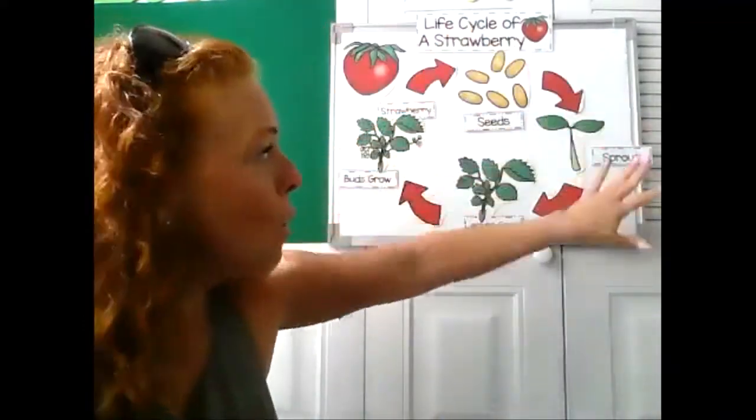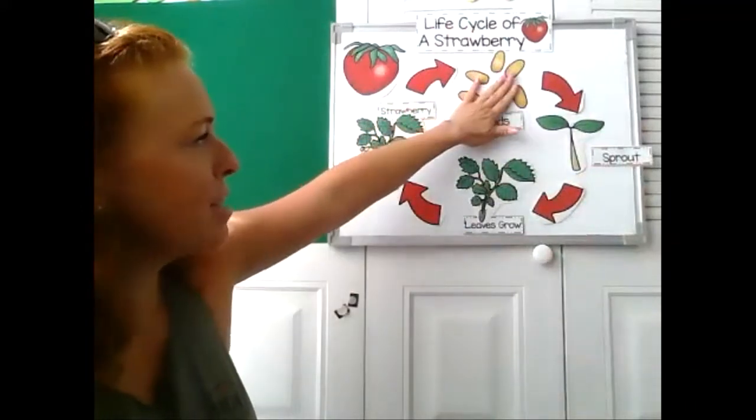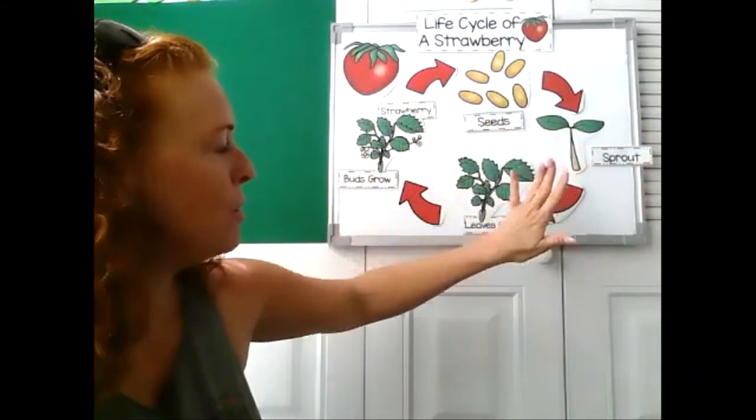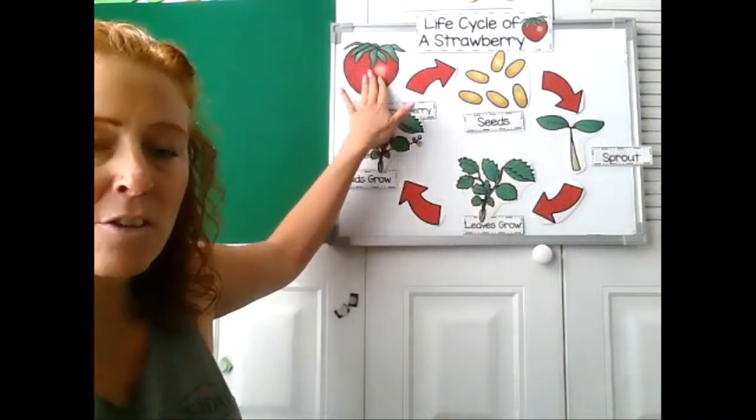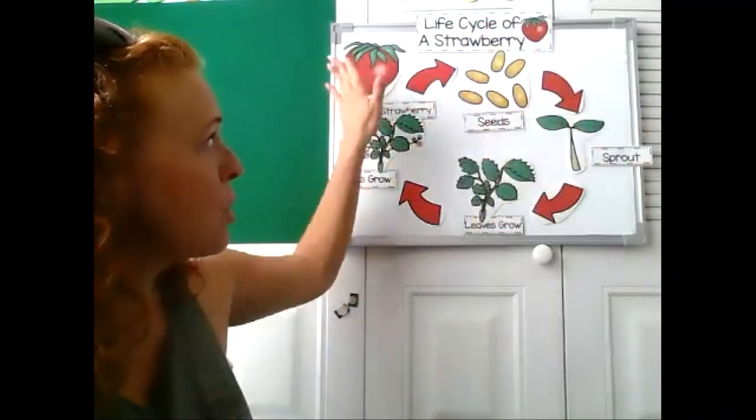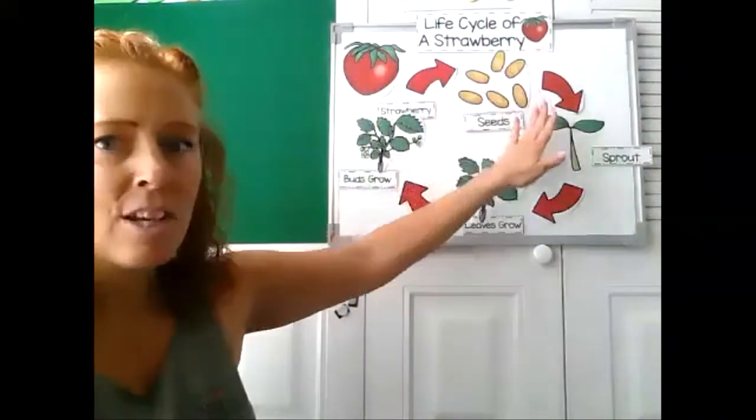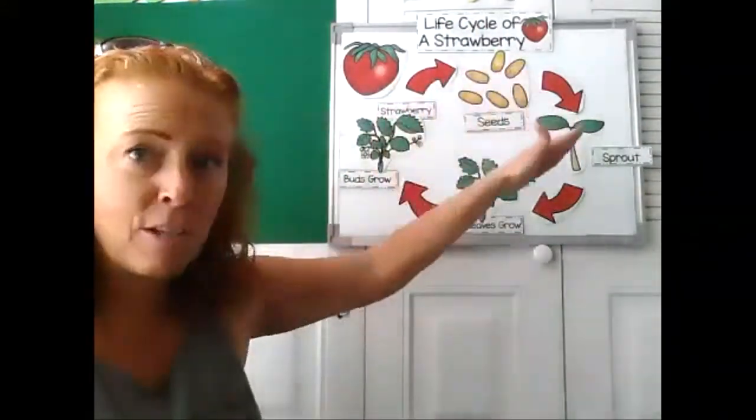And then it happens all over again. You plant the seeds, you'll get a sprout, the leaves will grow, you'll get the little buds and then you'll get a strawberry. And it just keeps going and going. They say it's the circle of life and that's what it is.